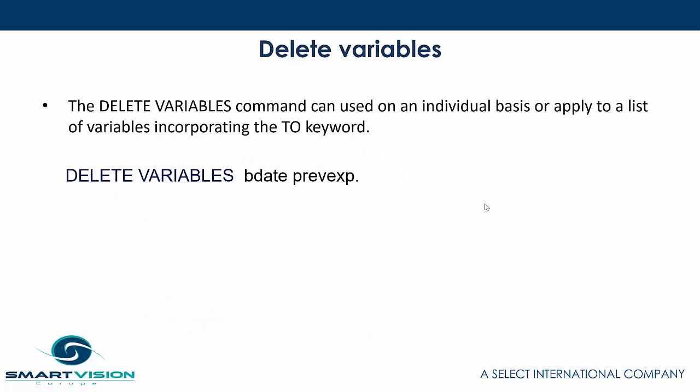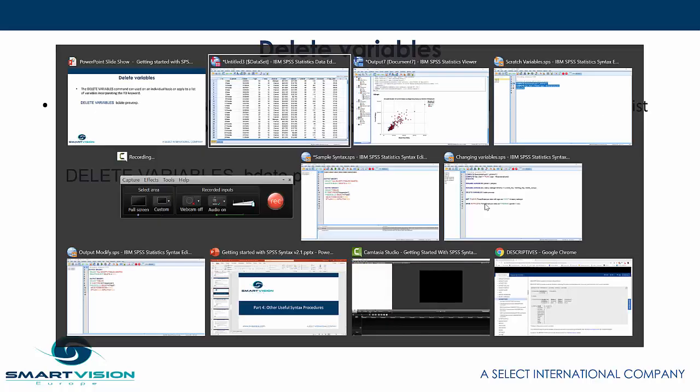The next example is delete variables — very simple. Delete variables just allows us to physically delete variables rather than manually clicking on the variable name and deleting them. It's a useful way to clean up a data set if you've got unwanted variables in there.